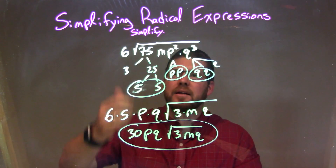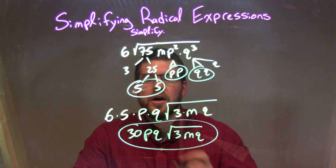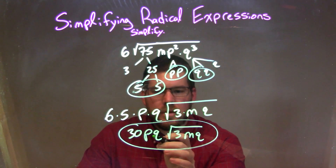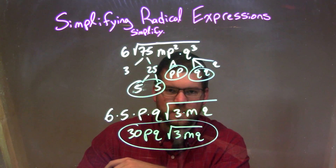We simplify that, and this gives our final simplified answer, which is 30pq times the square root of 3mq. We'll see you next time.